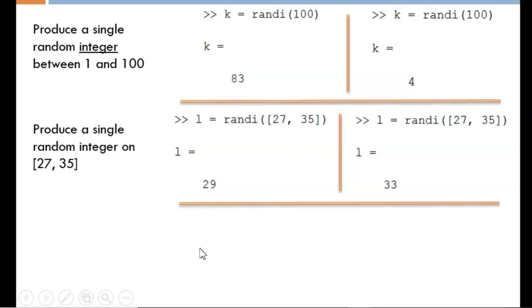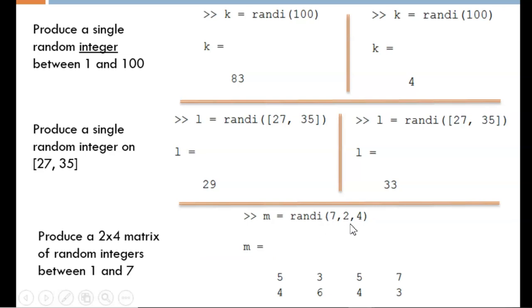Finally, if we want an array of random values produced, we must provide the interval followed by the number of rows and columns. In this example, all the random integers fall between 1 and 7 because of the 7 in the first field, and a 2 by 4 matrix is produced because of the 2 and 4 as input arguments.